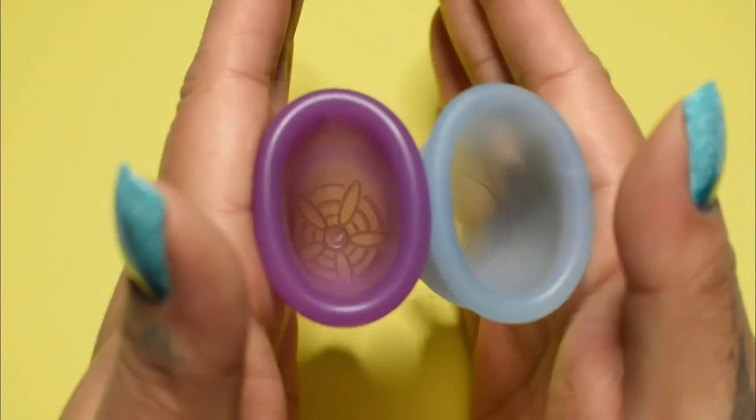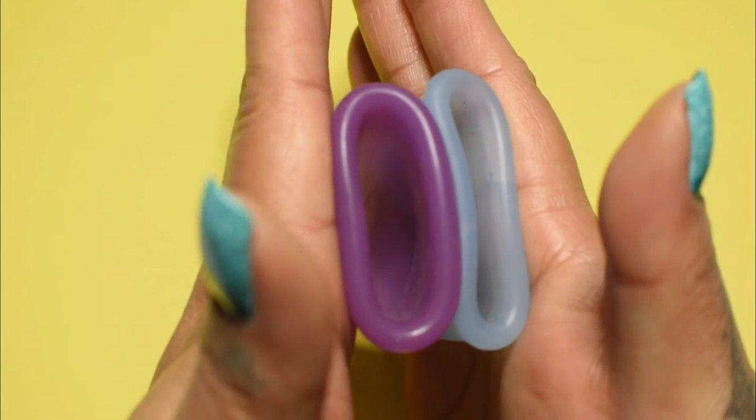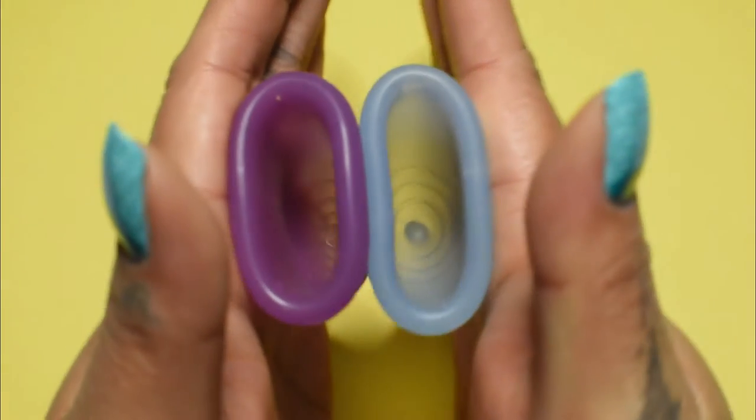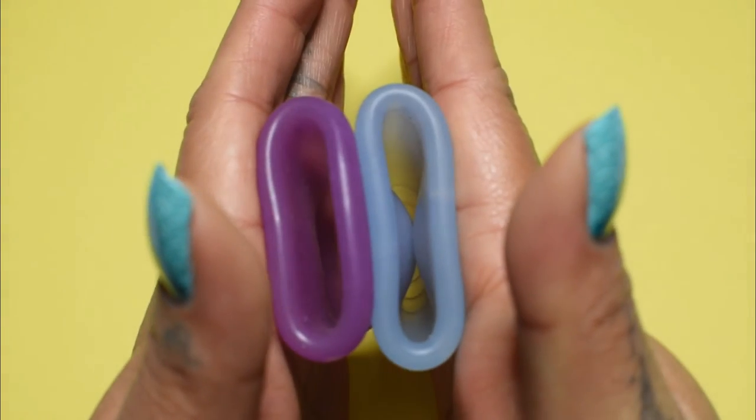Here is the inside of the Scoon cup, and inside of the Korui. Again, these are both the size small.